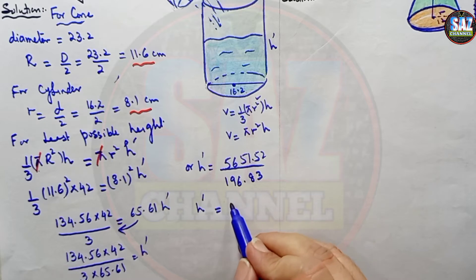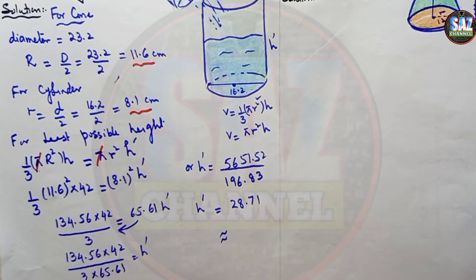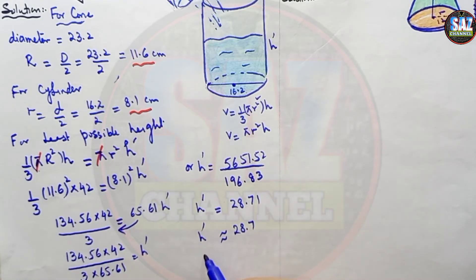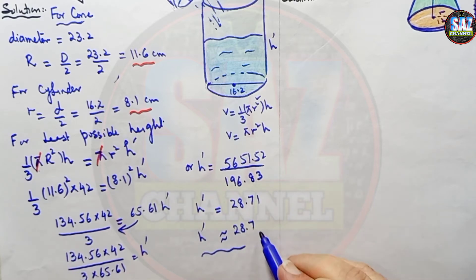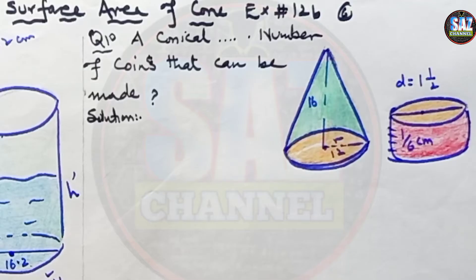As we have to give our answer to three significant figures, the least possible height is 28.7 cm. I hope you are clear about this question. Let's move to the next question. Let me read it from the book and compare the data so that if there is any problem in writing the data, I can correct it in the beginning.